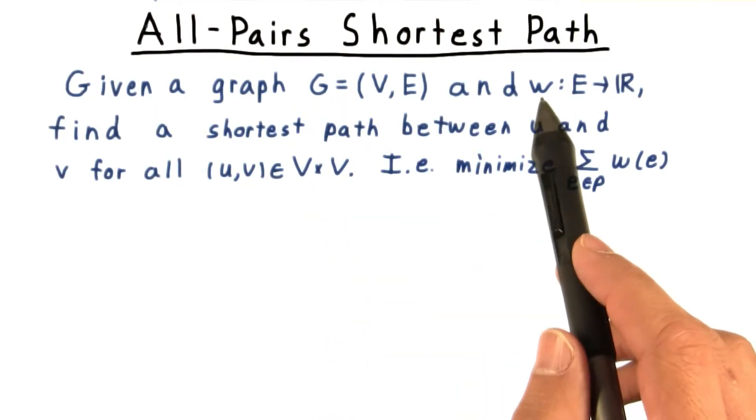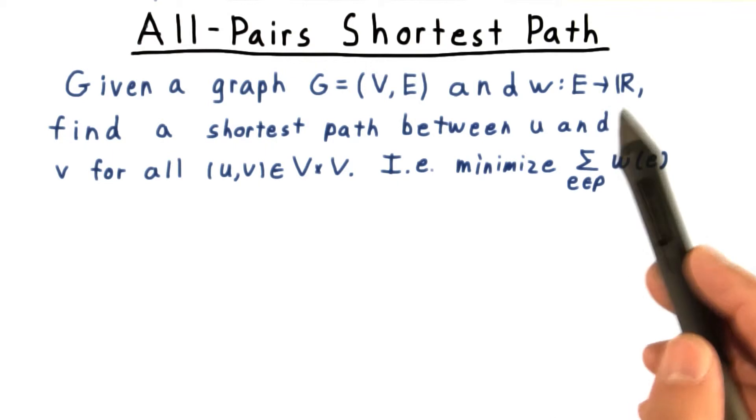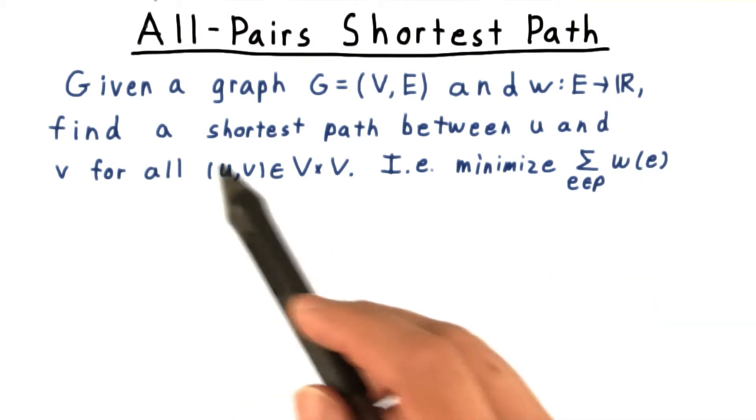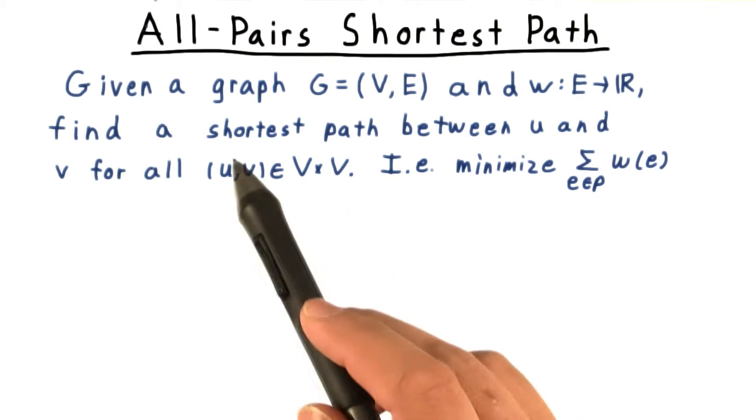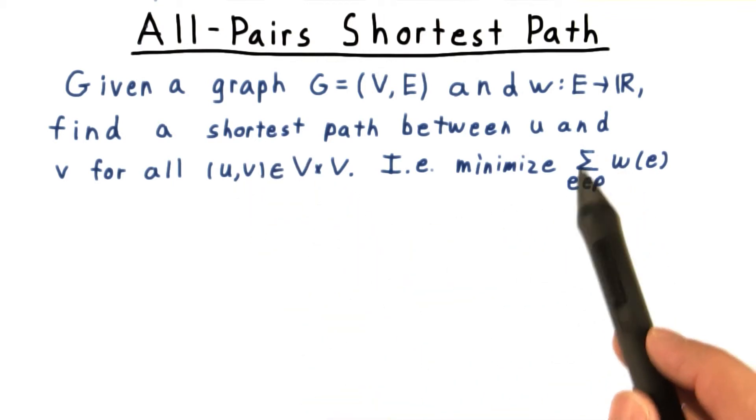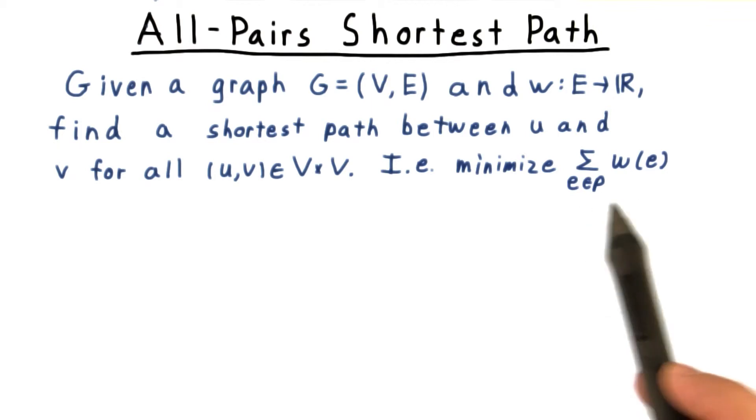We're given a graph G, and a weight is associated with every edge in the graph. Our goal is to find the shortest path between every pair u and v in the graph, that is to say, a path that minimizes the sum of the weights involved in the path.